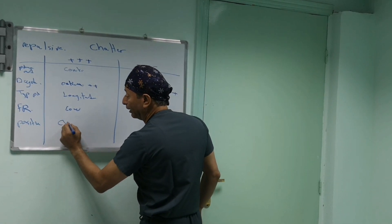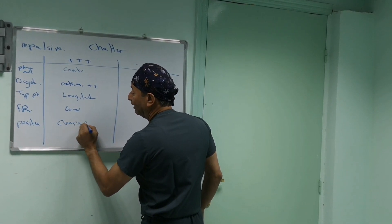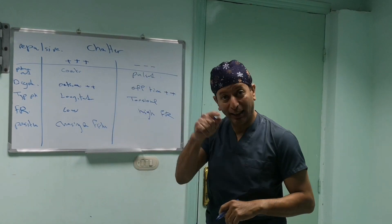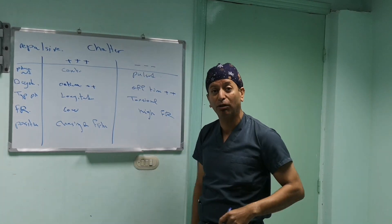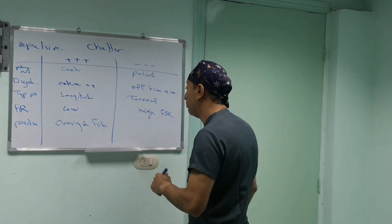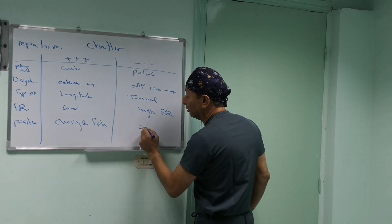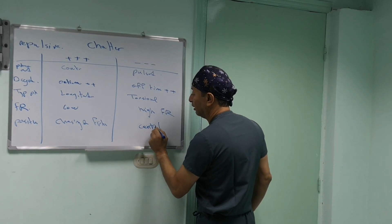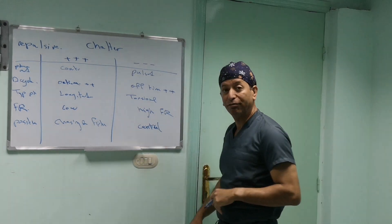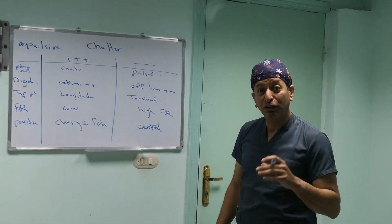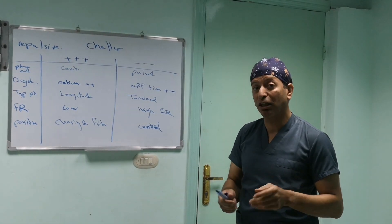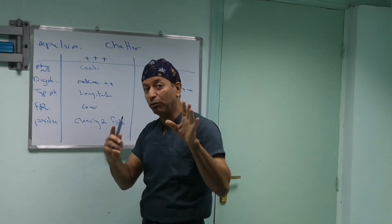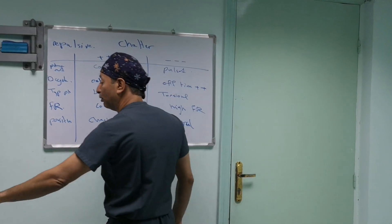Regarding the positioning of your phaco tip: if you're chasing and fishing after your particles, this will increase repulsion from your phaco tip. If you stay in a central position, this will reduce the effect of the chatter. Let me draw this to illustrate how the chatter effect will appear.